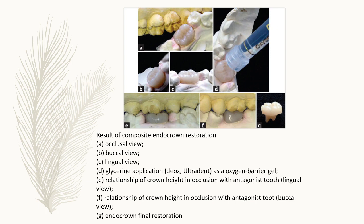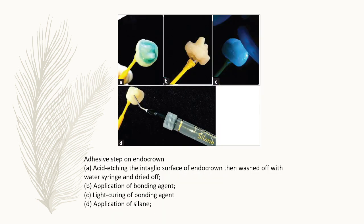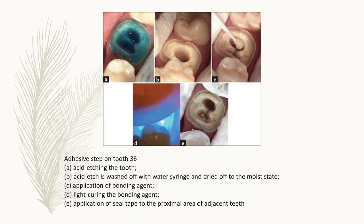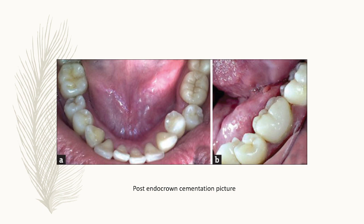Glycerin was applied as an oxygen barrier gel. The crown height and occlusion with the antagonist tooth were verified. For the adhesive step: acid etching was done on the tissue surface of the endocrown, washed off with water and dried. Bonding agent was applied and light cured, then a silane coupling agent was applied to improve bonding. For the tooth surface, acid etching was done, washed off and dried to a moist state. Bonding agent was applied and light cured. Sealing tape was applied to proximal surfaces of adjacent teeth for protection.